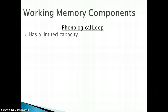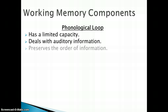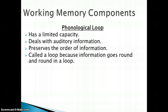The phonological loop is another part of working memory with limited capacity. It deals with auditory information — sounds — and it preserves the order of information. It's called a loop because the information goes round and round. For example, if I give you a phone number to remember, you remember those numbers in order and then repeat them to help you remember — what we called verbal rehearsal in the multi-store model.